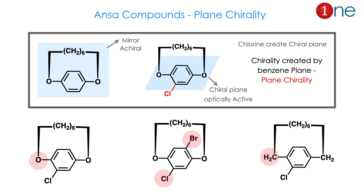Here are a few representative examples of ansa compounds. Ansa compounds are like benzene attached with a long-chain alkyl group with terminal oxygens in the para position. The simple ansa compound is achiral because it has a mirror plane — half the atoms are above the plane and half below. But if you substitute with chlorine, the magic happens: the compound gains chirality and becomes optically active. The plane itself becomes chiral. Three examples are given: chlorine-substituted, bromine-chlorine substituted, and one with methylene groups instead of oxygen.